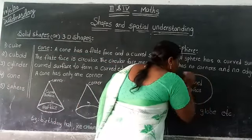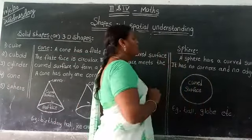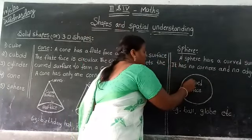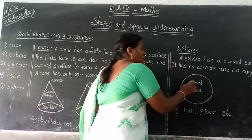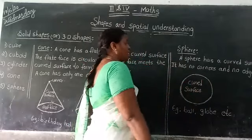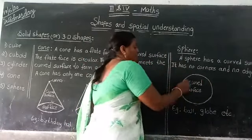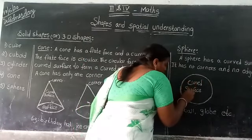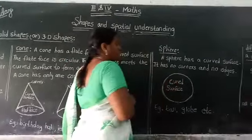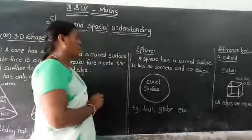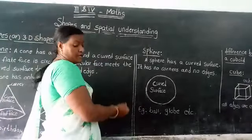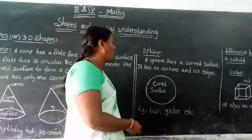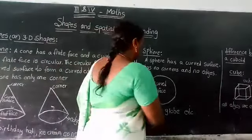The sphere has no corners and no edges — only one curved surface. This is the curved surface of a sphere.